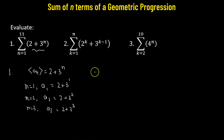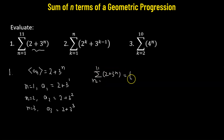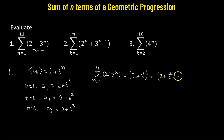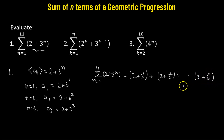Now we find the sum. The summation of 2 plus 3 raised to the power of n, where n goes from 1 to 11, equals the first term 2 plus 3 raised to the power of 1, added to the second term 2 plus 3 squared, going on up to the 11th term which is 2 plus 3 raised to the power of 11.